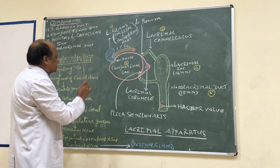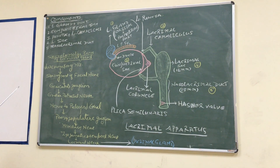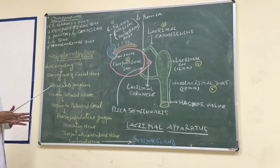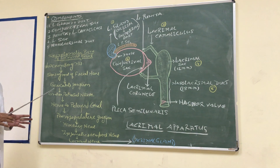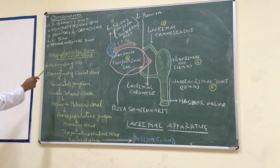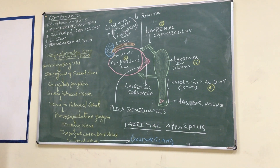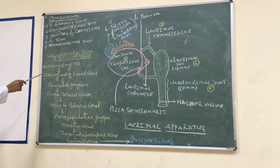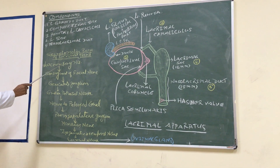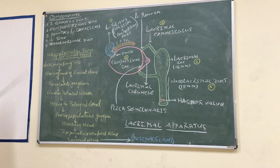This lacrimal gland is supplied by the lacrimal nerve, which is sensory to the gland. Apart from the sensory supply, it has a secretomotor pathway. The preganglionic fibers arise from the lacrimal salivatory nucleus, which is situated in the pons.